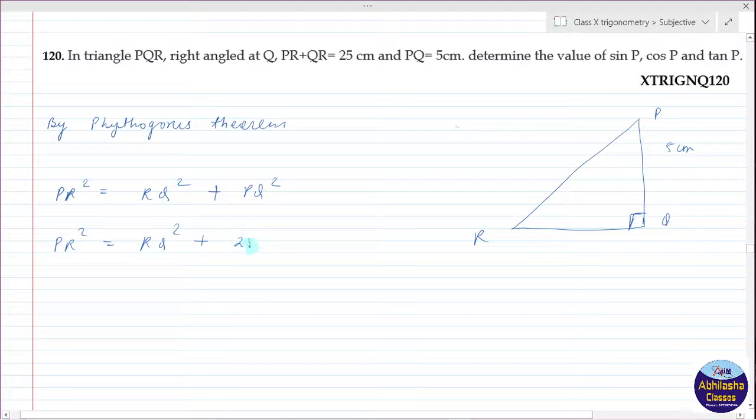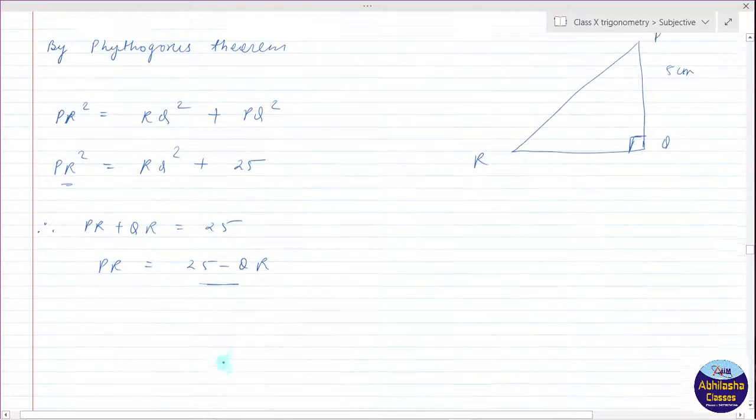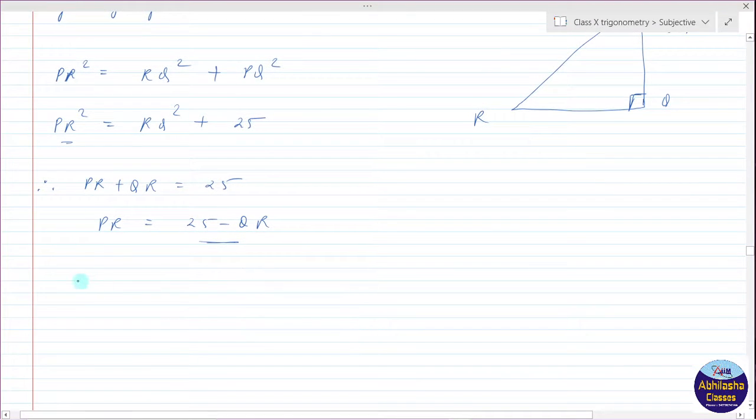Now we have, therefore we have PR plus QR equal to 25 centimeters. So here we have PR, so it will be 25 minus QR. So PR will be, I am putting, 25 minus QR. So here we have 25 minus QR squared.